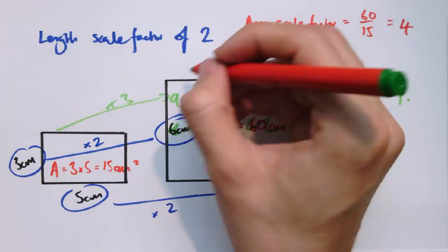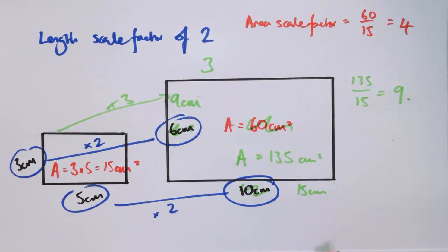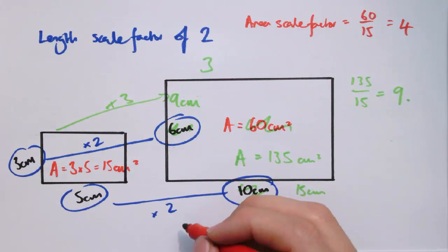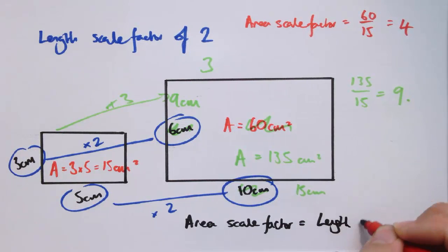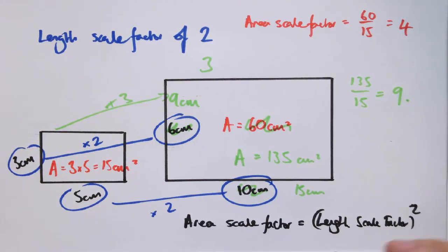So with a length scale factor of 3, we end up with an area scale factor of 9. And this is an example of a general result which says that the area scale factor is the length scale factor squared.